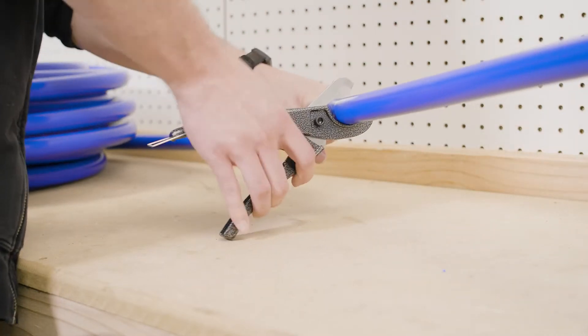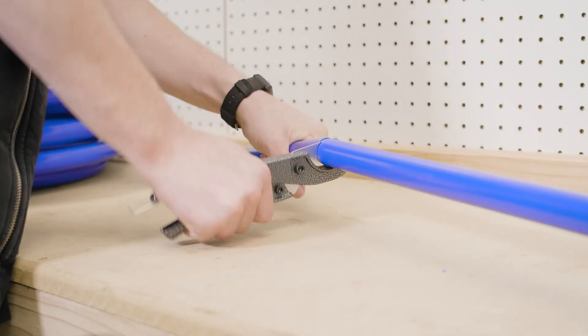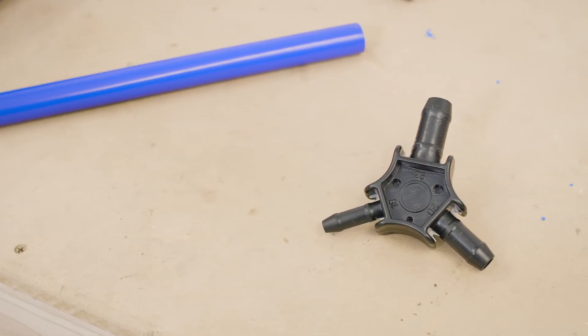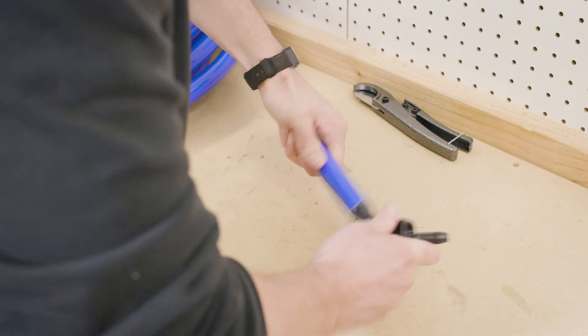Using the tubing cutter, rotate the cutter to ensure a square cut. Insert the three-quarter inch portion of the deburring tool into the tube and rotate approximately three times to deburr the tubing.